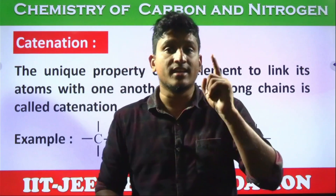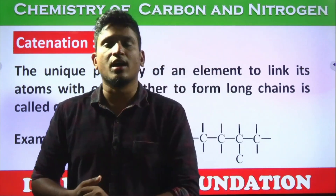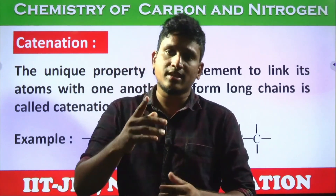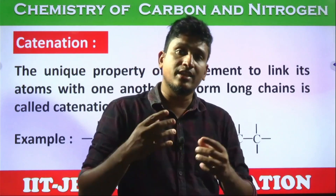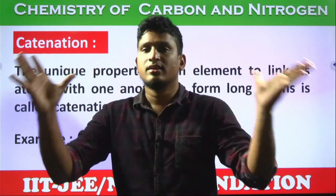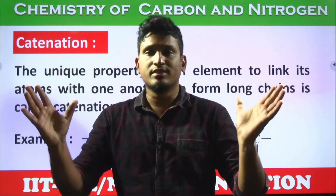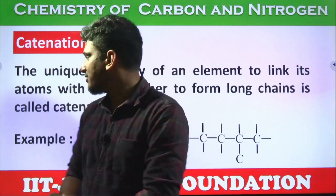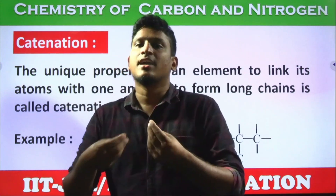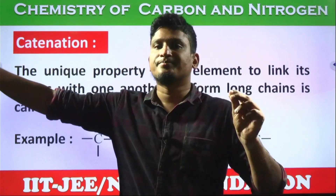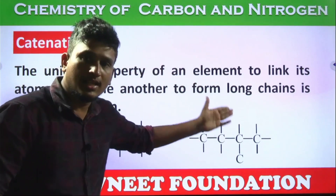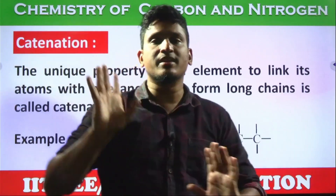The reasons are catenation and the tetravalency of carbon. Silicon, which is in the same group, also has tetravalency and should show catenation, but why does carbon excel at producing so many compounds? Catenation is the self-linking capacity of carbon with other carbons to the maximum extent — infinite, with no limit. That is called catenation.